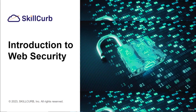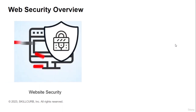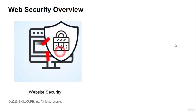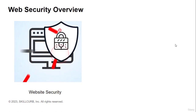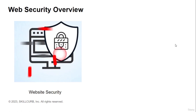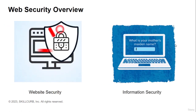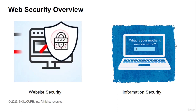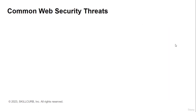Hello everyone, welcome to this lecture on introduction to web security. Web security refers to the practice of protecting websites, web applications, and web servers from unauthorized access, data breaches, and malicious attacks. It involves implementing measures to ensure the confidentiality, integrity, and availability of web resources. These are crucial to protect sensitive information such as user data, financial transactions, and confidential business data. Breaches in web security can lead to identity theft, financial loss, reputational damage, or legal consequences.